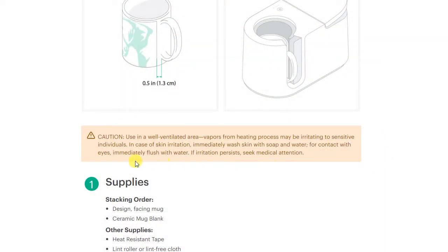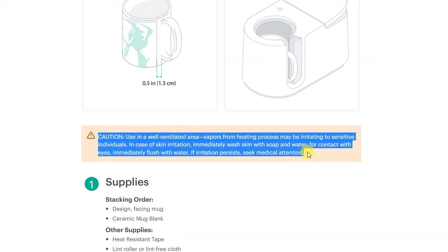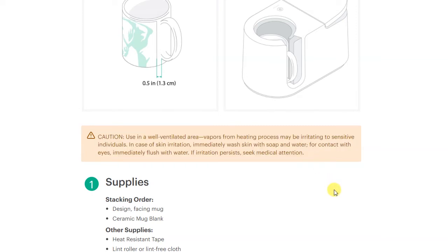Before we turn on the mug press I want to make sure to note that the mug press should be used in a well ventilated area because it can cause irritation to sensitive individuals. I personally am very sensitive to this so I use a mask. I also open a window and I have a fan going to make sure there's a lot of ventilation. Do what you feel comfortable with here but Cricut does specifically state that this should be used in a well ventilated area so please use this product safely.